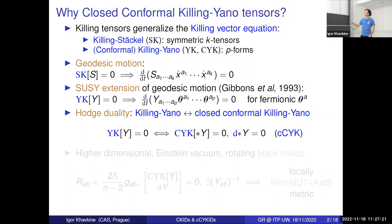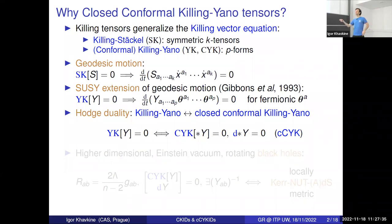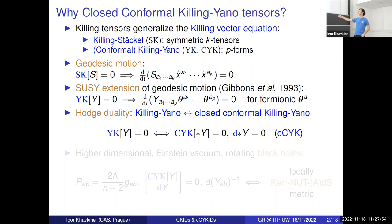There's also a nice duality: when you take the Hodge dual of something satisfying the Killing Yano equation — say a p-form in n dimensions — you get an (n−p)-form, and that (n−p)-form satisfies the conformal Killing Yano equation together with the closure condition. The converse also holds: starting with a higher-rank form and transforming to something lower rank, you get this relationship.